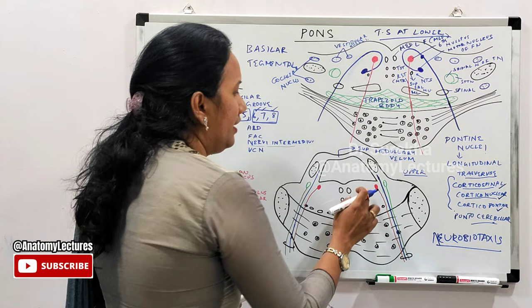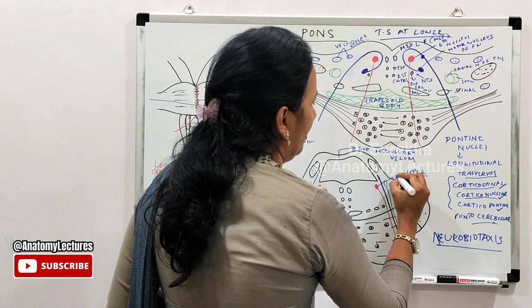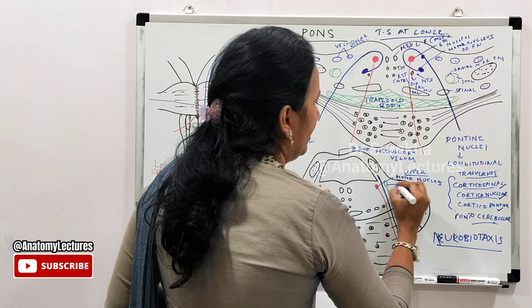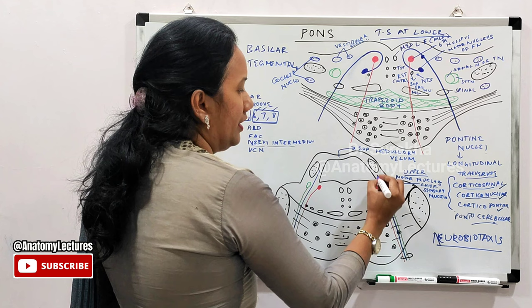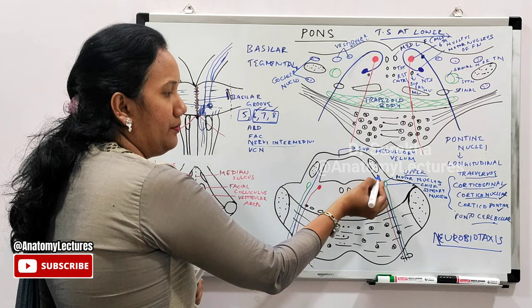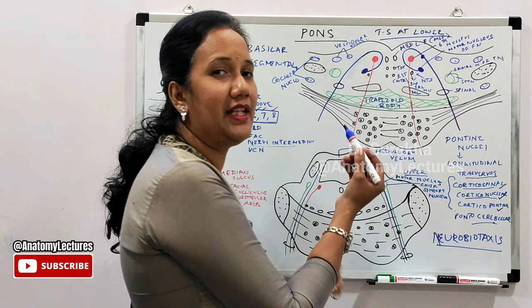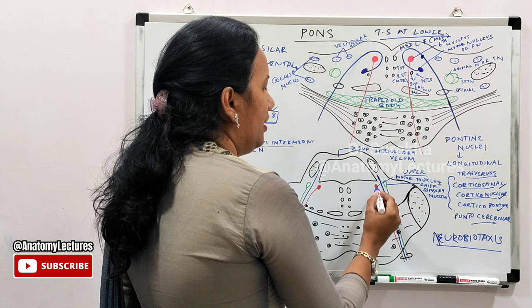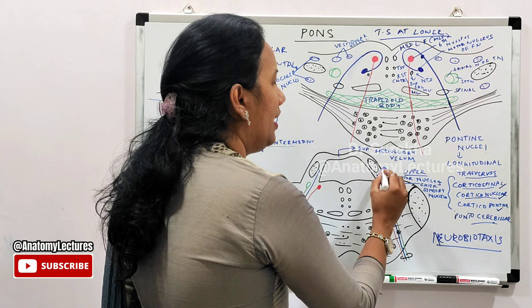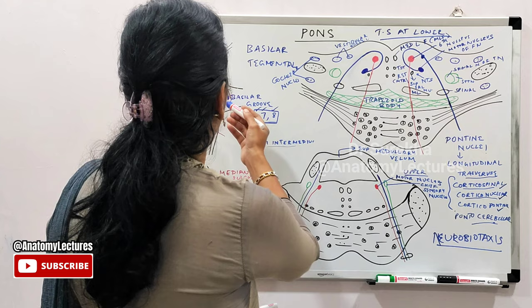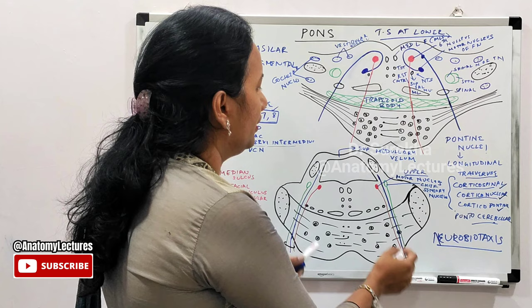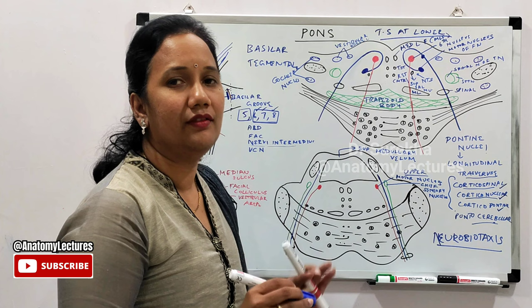The nuclei at the upper level: the medial-most is the motor nucleus of the trigeminal nerve, and the lateral-most is the chief sensory nucleus of the trigeminal nerve. In between, fibers are shown from the mesencephalic nucleus of the trigeminal nerve, which is located in the midbrain. The motor fibers, fibers from the mesencephalic nucleus, and fibers from the chief sensory nucleus unite to form the trigeminal nerve, emerging at the junction between the pons and the middle cerebellar peduncle.